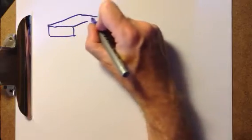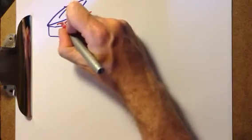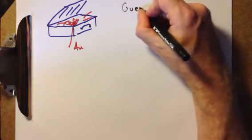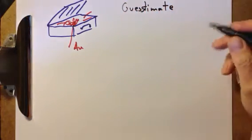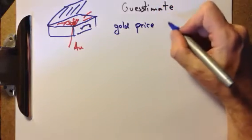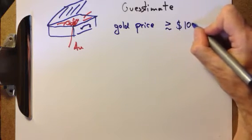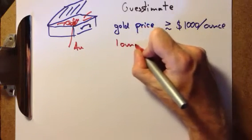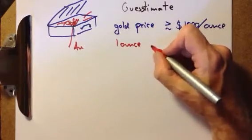Let's do one of those. Someone claims a thief escapes with a suitcase full of gold. Is that possible? Guesstimate the answer. Well, you might say the gold price at the moment is roughly of the order — in fact, a bit larger than a thousand dollars per ounce. You know an ounce is approximately 30 grams.